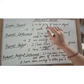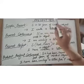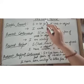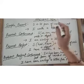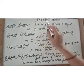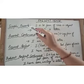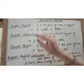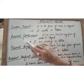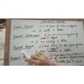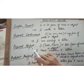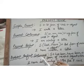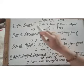Let's start with present tense. As I have already told you, present tense can be divided into four types: simple present, present continuous, present perfect, and present perfect continuous.